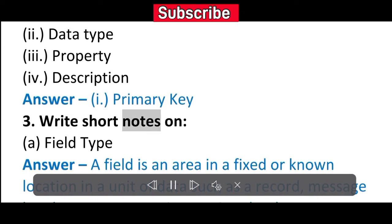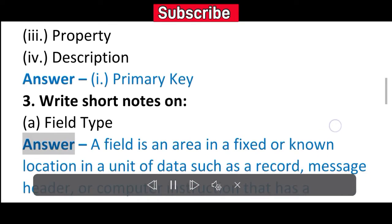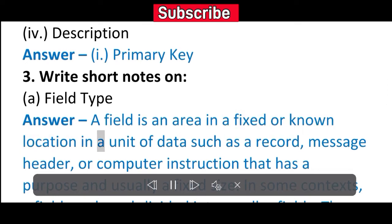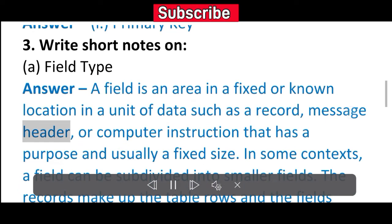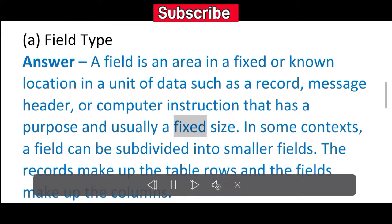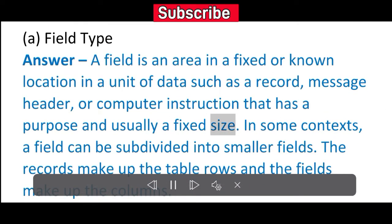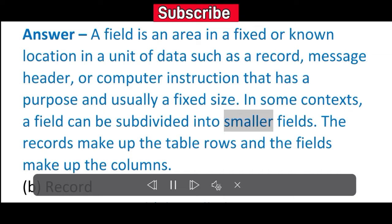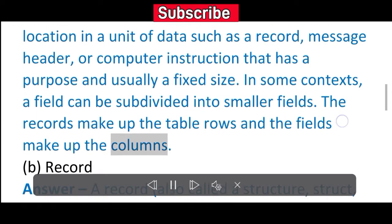3. Write short notes on: A. Field Type. Answer: A field is an area in a fixed or known location in a unit of data such as a record, message header, or computer instruction that has a purpose and usually a fixed size. In some contexts, a field can be subdivided into smaller fields. The records make up the table rows and the fields make up the columns.